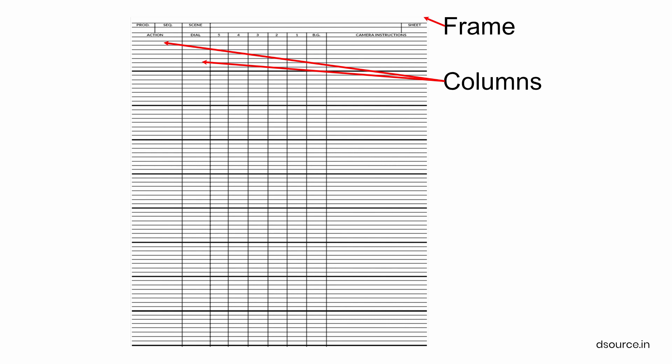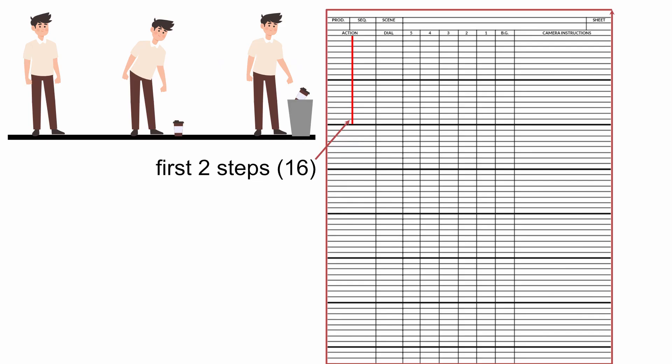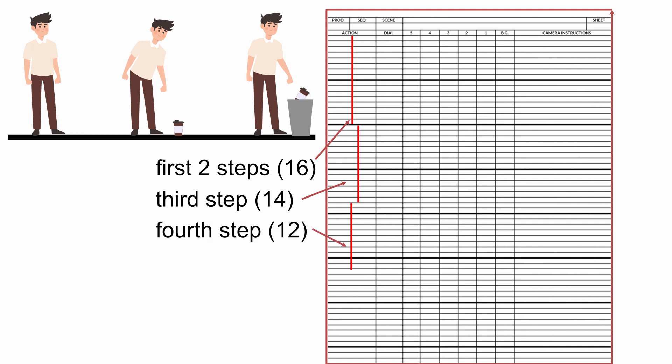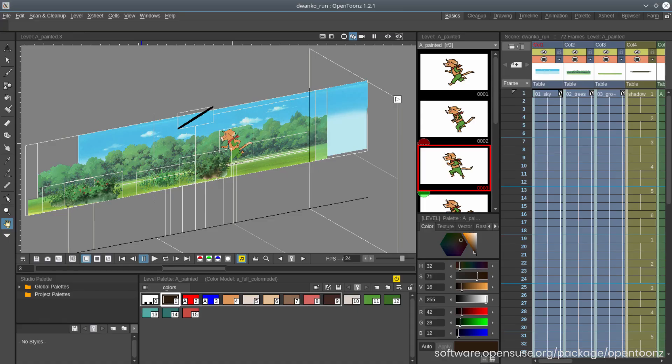Traditionally, the X-sheet is designed for 4 seconds of animation at 24 frames per second. For our man picking up the cup example, I would use 16 frames for his first two steps and 14 frames for the third step, since he will walk faster after seeing the paper. Step 4 would be even quicker, using only 12 frames. On step 5, he would slow down back to 14 frames and begin bending down toward the cup.